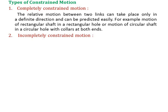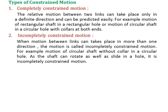The second type is incompletely constrained motion. When motion between links can take place in more than one direction, it is called incompletely constrained motion. For example, a circular shaft without a collar in a circular hole — since there is no collar, two motions are possible: reciprocatory motion as well as rotary motion.